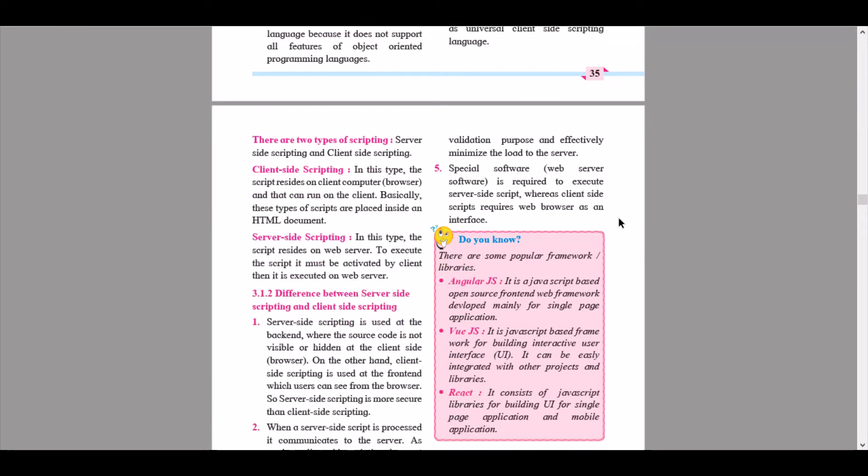Then we continue to next part that are the two types of scripting: server-side and client-side scripting. We start here with client-side scripting first. In this type, the script insides on client computer browser and that can run on the client. Basically, these types of scripts are placed inside an HTML document.